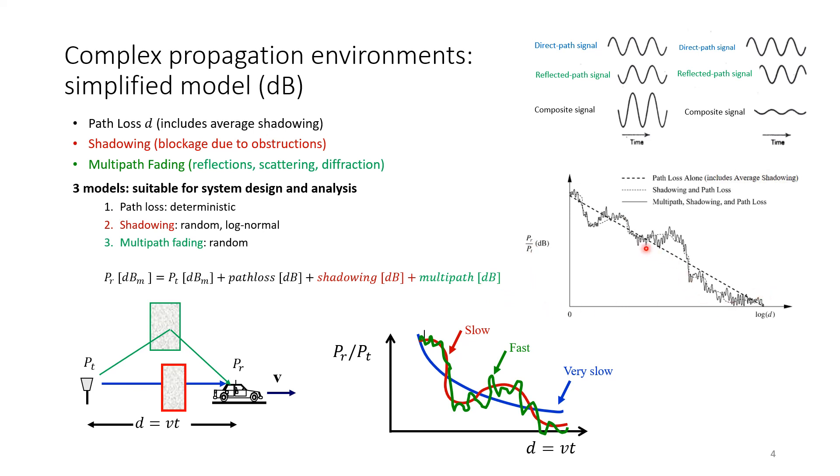How do we model this? We know that path loss is deterministic or we're going to represent it deterministically. Shadowing, we're going to use random, and usually we use log-normal distribution. These are random, different from one environment to another. Multipath is also going to look as random because it depends on the reflecting and the surfaces around. How to model this is our objective.